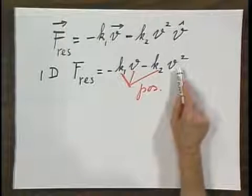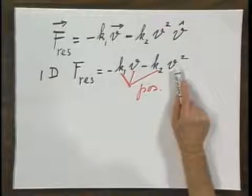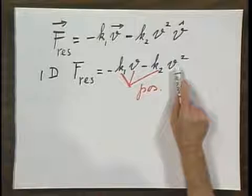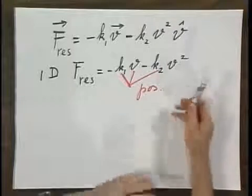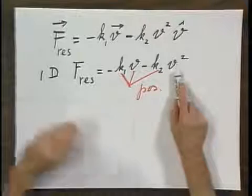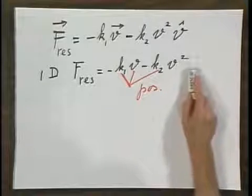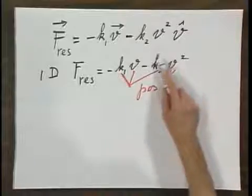When I have a raindrop falling, this term dominates. I hit a baseball, I throw a pebble, a car going with a speed larger than say 50 miles per hour, this term dominates. An airplane, no question, this term dominates.